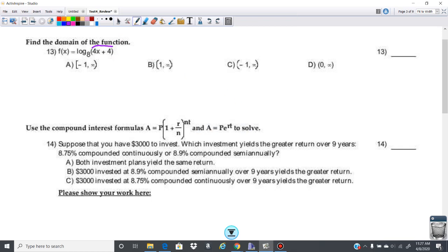Our trick here is to just take our answer, so this 4x plus 4, and we're going to set it greater than 0. Then we're going to solve that. If we subtract a 4 here, we're going to get 4x is greater than negative 4, and then we'll divide by 4, and we'll get x is greater than negative 1.